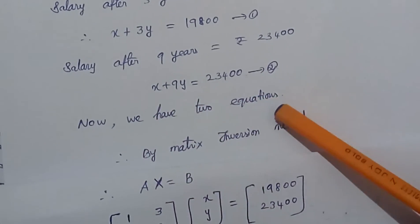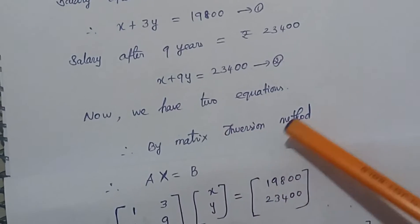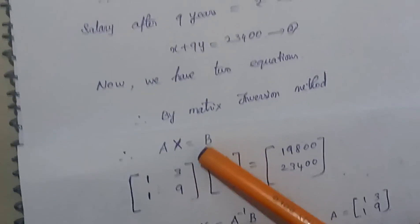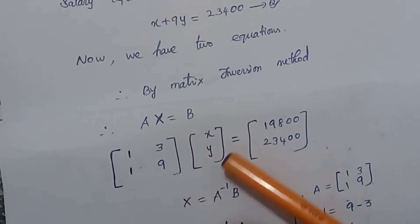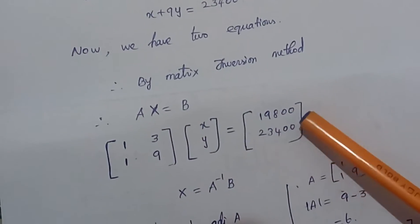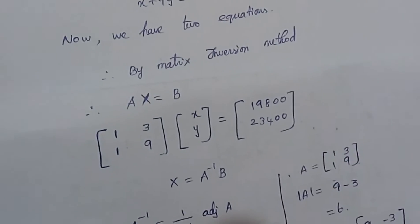Now we have 2 equations. By Matrix Inversion Method, AX equals B. Matrix A is [1, 3; 1, 9], the coefficients of X and Y. Here, X and Y form the variable matrix. B is [19,800; 23,400].